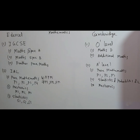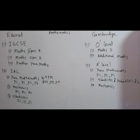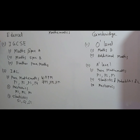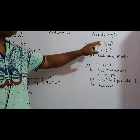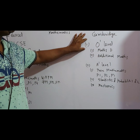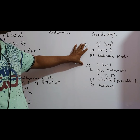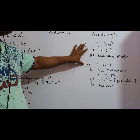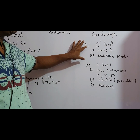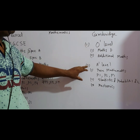In our country there are two UK boards widely available: one is ADEXCEL and another one is CAMBRIDGE. ADEXCEL provides for O level what is called IGCSE, and for A level it is called IAL. These two are equivalent to SSC and HSC of our national curriculum. Similarly, CAMBRIDGE also has O level and A level, and they also have an IGCSE option that students in our country can choose.